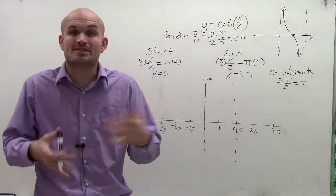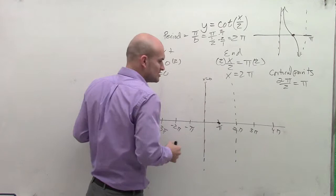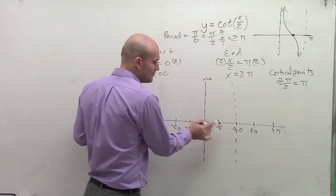Then our next critical point, like I said, remember, a critical point is either going to be our asymptote or our intercept. So therefore, our x-intercept is going to be at pi.